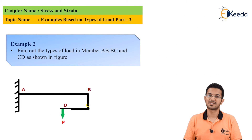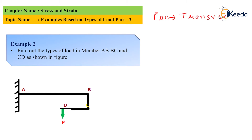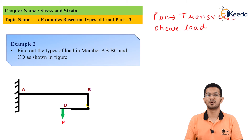Now let's go for the second example. Find out the types of loads in members AB, BC and CD as shown in the figure. For member DC, load P is parallel to the surface and passes through the longitudinal axis. Hence, load P is transverse shear load. For member BC, load P is normal to the surface but does not pass through the longitudinal axis. Hence, load P is eccentric axial load.